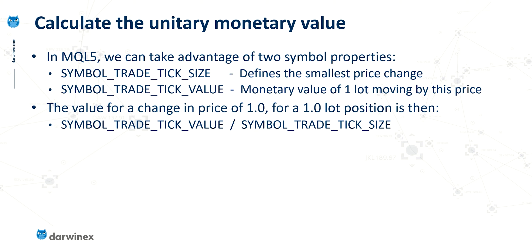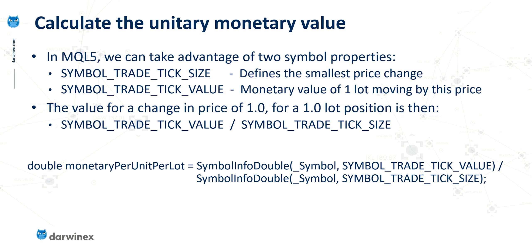The actual line of code you need here is this: declare a double variable — in this case I've called it monetary per unit per lot — then use the function symbol info double provided by the MQL5 platform, passing it two parameters. The first is the symbol you're interested in; the second is the symbol trade tick value property. Then you simply divide that by the result of a second function call asking for the tick size. You've now got that unitary monetary value.